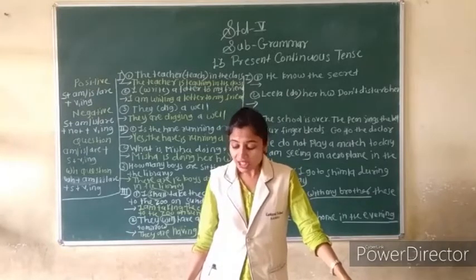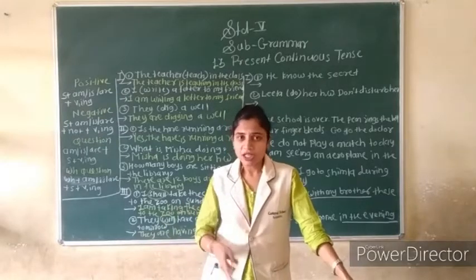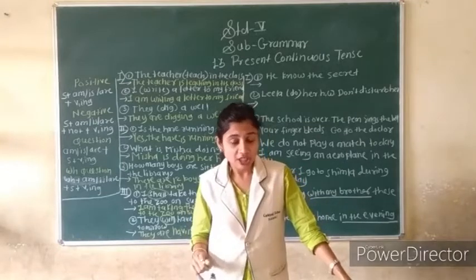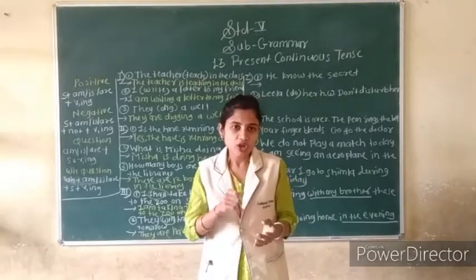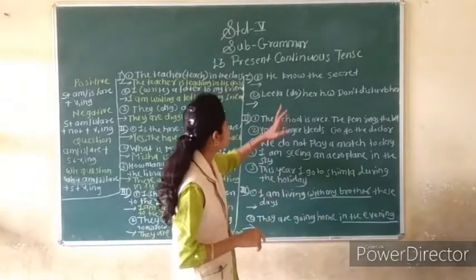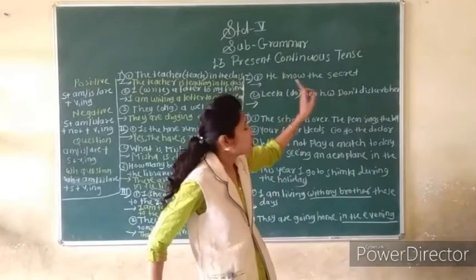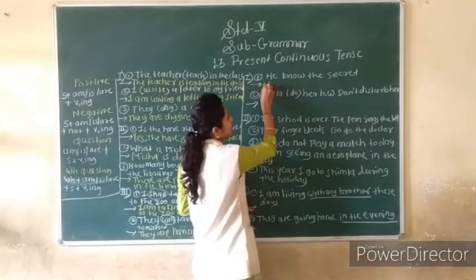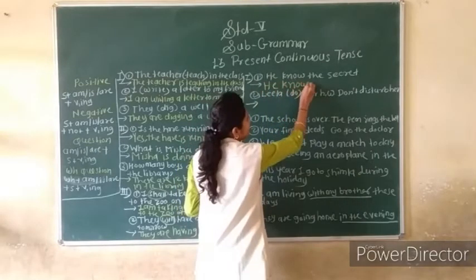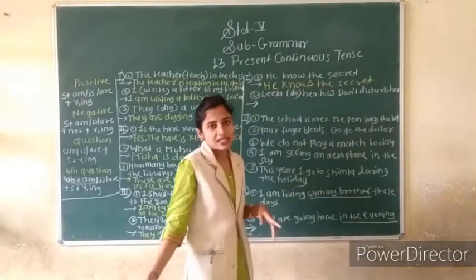On page number 33, Exercise 1: Put the words in brackets into simple present or present continuous. For permanent actions use simple present; for ongoing actions use present continuous. First: He know the secret — 'knowing' is not correct here. So: He knows the secret. We use simple present tense.